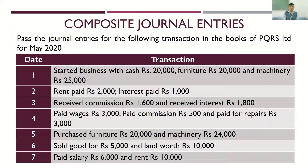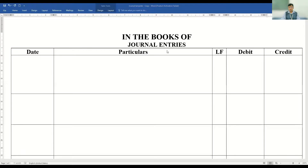Now let's look at a question together. We will be preparing composite journal entries. The question says: pass the journal entries for the following transactions in the books of PQRS. The first transaction on May 1st: started business with cash rupees 20,000, furniture 20,000, machinery 25,000. When you start a business, any asset you bring in is referred to as capital. You can contribute capital not just as cash but also in the form of assets. So cash, furniture, and machinery are all part of your capital.